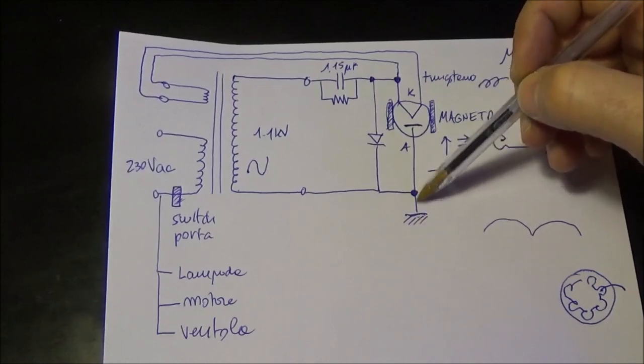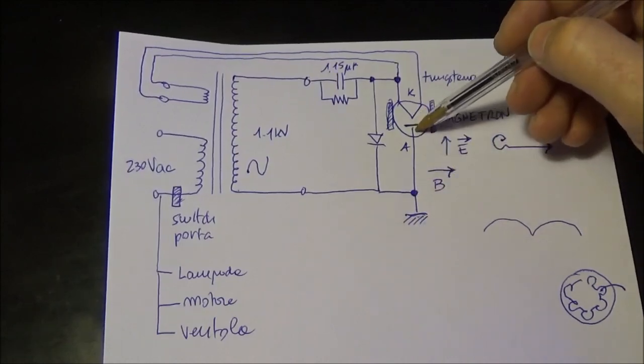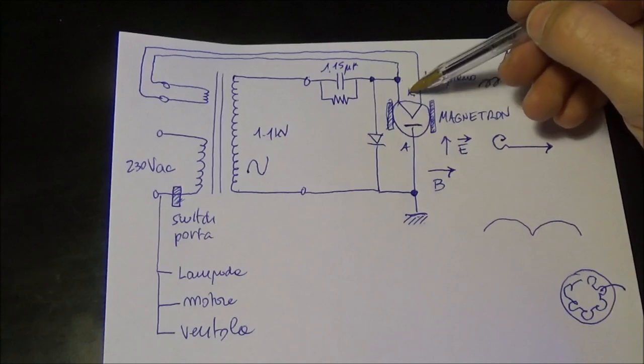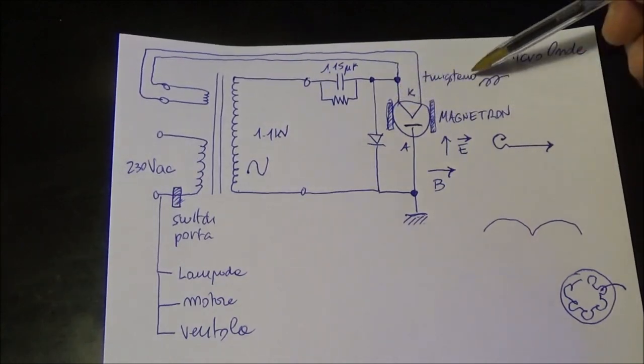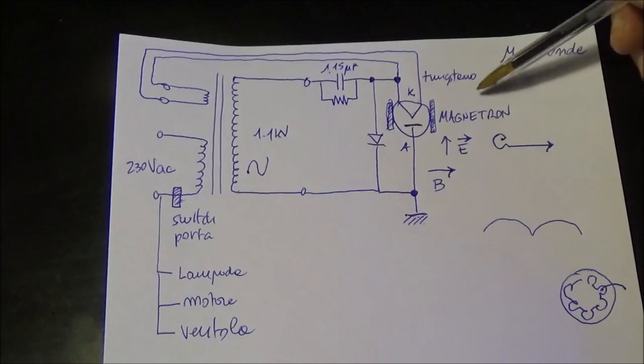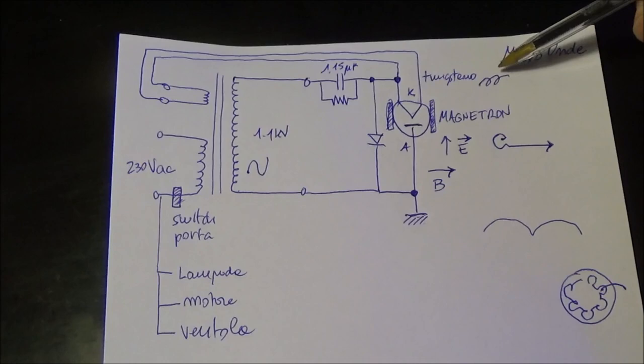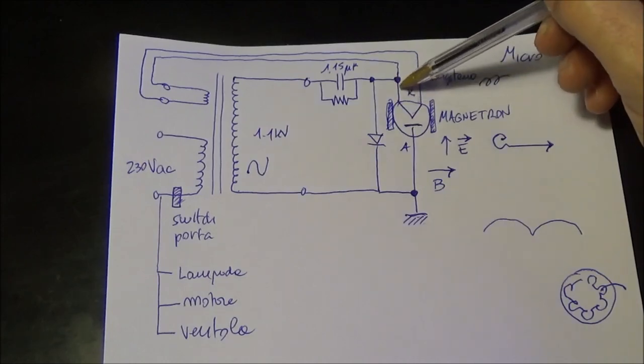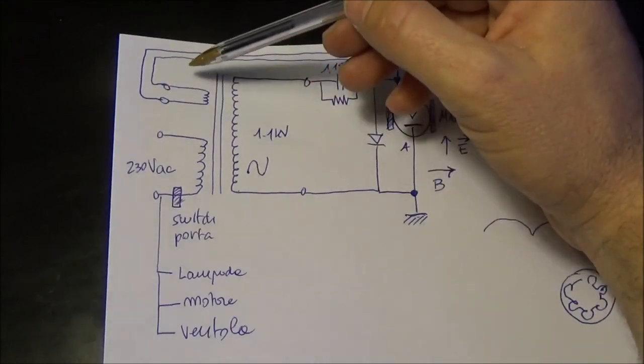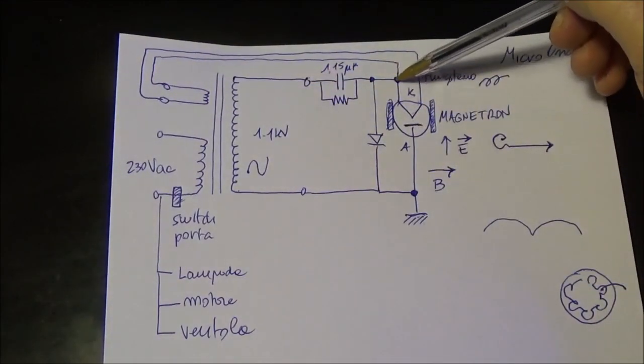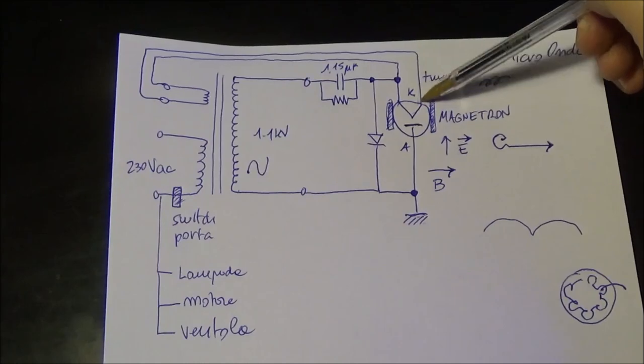And then we have the cathode that is in common with the filament that are supplied from special windings of the transformer. And this cathode is necessary to create electrons by thermionic effect.